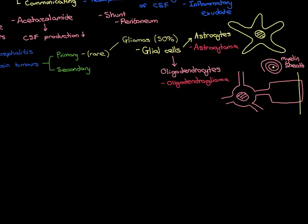The second most common type of primary brain tumour after gliomas is meningiomas. A meningioma is a brain tumour that originates from cells within the meninges — the meningeal layers that surround the outside of the brain, which are tissues inside the cranial cavity. When a primary brain tumour has originated from cells making up the meningeal layers, we call that a meningioma. They account for 20% of primary brain tumours.